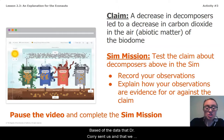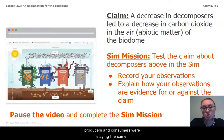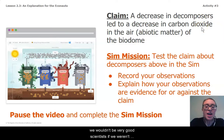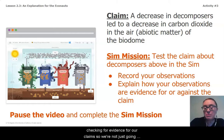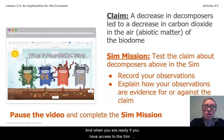Based on the data that Dr. Corey sent us, we noticed that the decomposer population was decreasing over time while producers and consumers stayed the same. So it's reasonable to claim that the decrease in decomposers is what led to the decrease in carbon dioxide in the air. However, we wouldn't be very good scientists if we weren't checking for evidence for our claims.